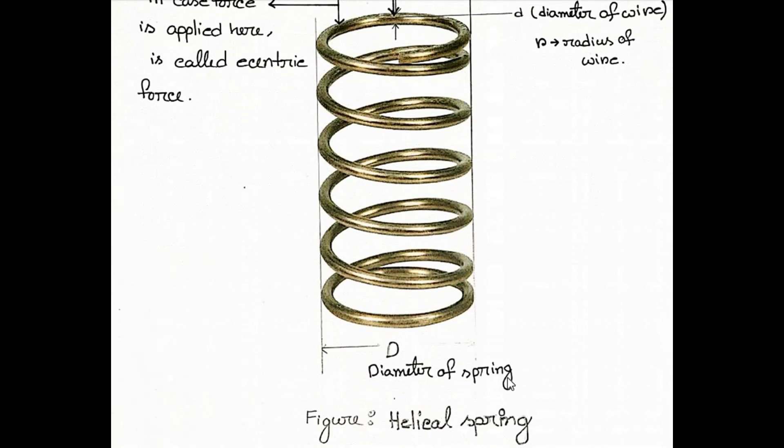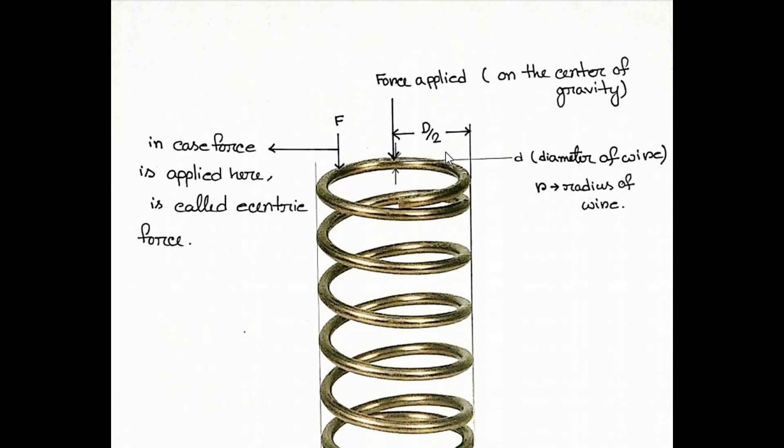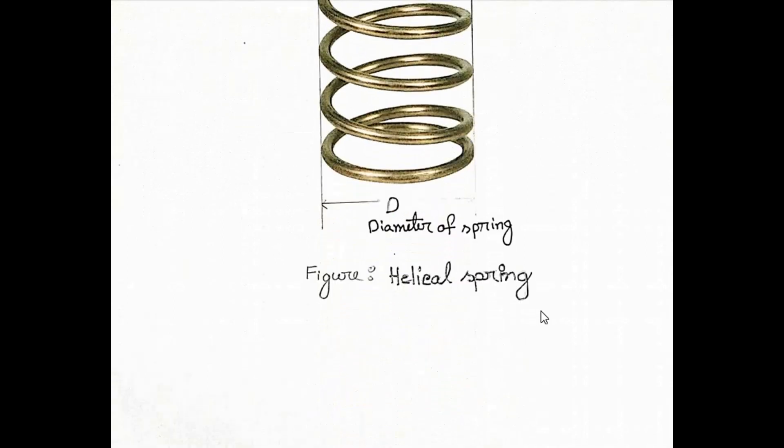Here we denote capital D as the diameter of spring and small d as the diameter of wire, so small r is the radius of the wire. If we apply force on the center of gravity (CG) of this spring, and if we don't apply force on the center of gravity, it's called eccentric force.